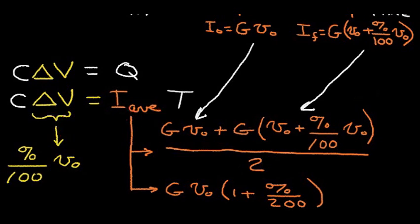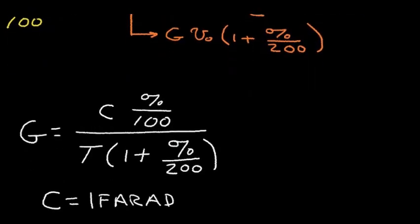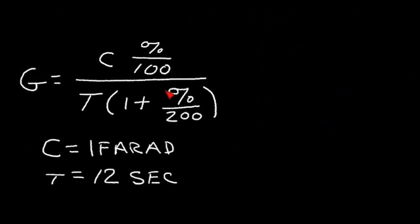...we get this equation. So we get the equation for G in terms of percent interest rate. And notice that there's a capacitor term and that there's a time term in the denominator.